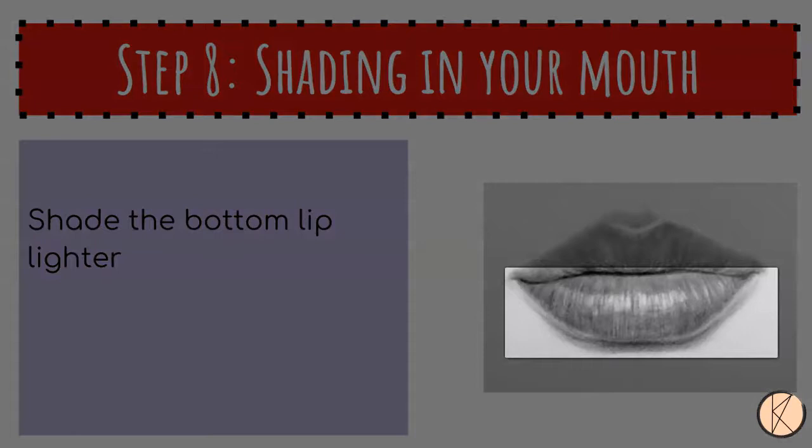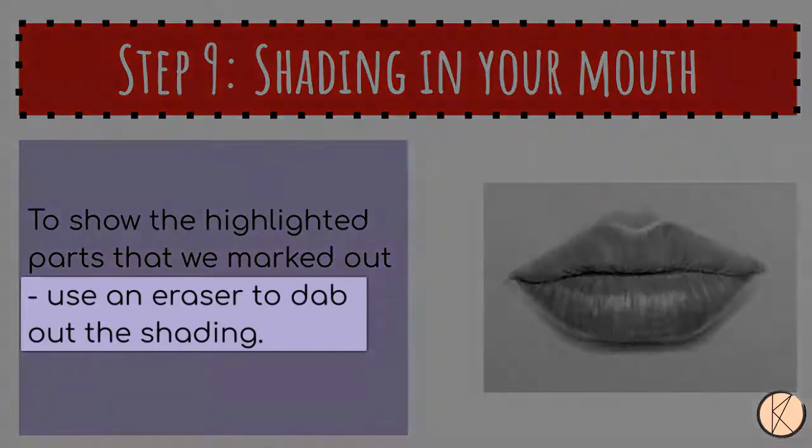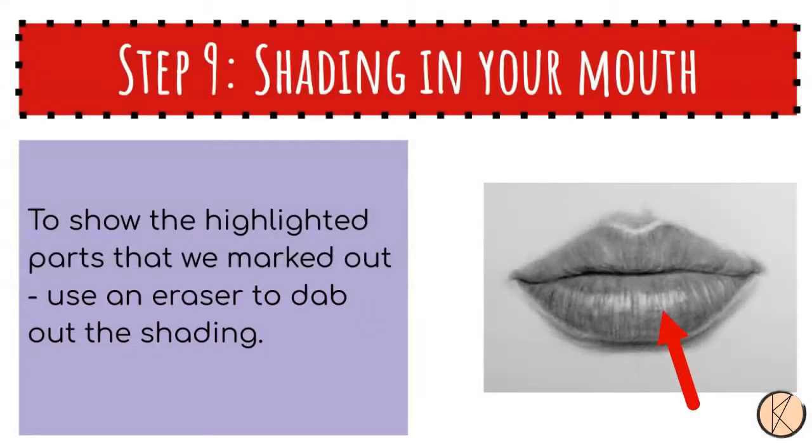Next, shade in the bottom of the lip lighter. Use an eraser to gently rub out the highlighted areas. This technique is used to create a gentle transition effect between the lighter and darker areas.